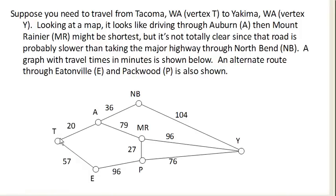Suppose we want to travel from Tacoma over here to Yakima over here, and there are a few routes we can take: either down through Eatonville and Packwood, or through Auburn and North Bend, or through Auburn and Mount Rainier. It's not quite clear which route is fastest, so we're going to use something called Dijkstra's algorithm, which solves what's called the shortest path problem.